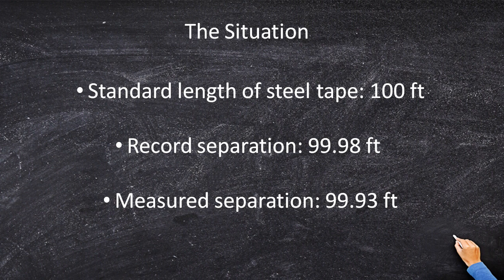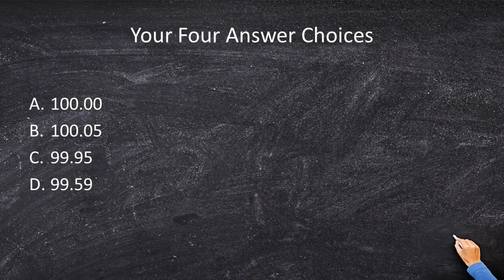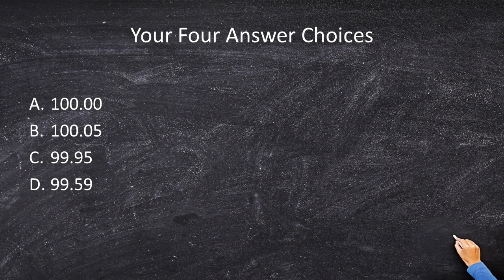So what is the question we're trying to answer? What I want to know is what is the true length of the tape. You think the tape is 100 feet even. What is the real distance between zero and 100? Your four choices are 100.00, 100.05, 99.95, and 99.59.